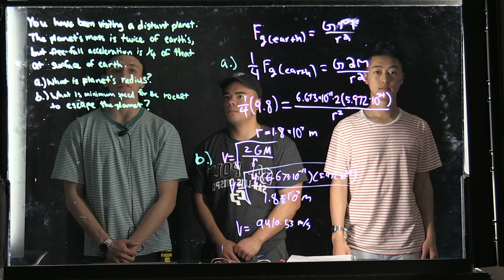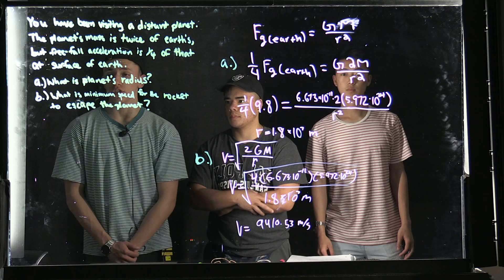The question states that you have been visiting a distant planet. The planet's mass is twice Earth's, but freefall acceleration is one-fourth of that at Earth's surface. There are two parts to this question.